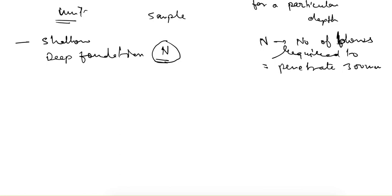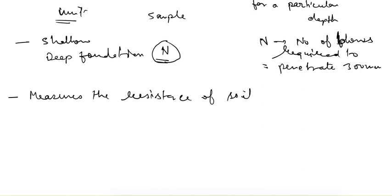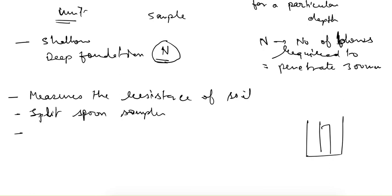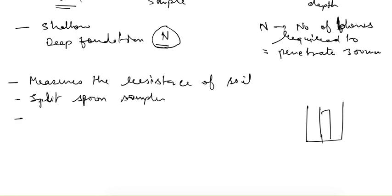The test measures the resistance of the soil strata using a split spoon sampler. First we dig a borehole, place the split spoon sampler in it, then apply impact loading. This test is conducted over a depth of up to 450 mm.